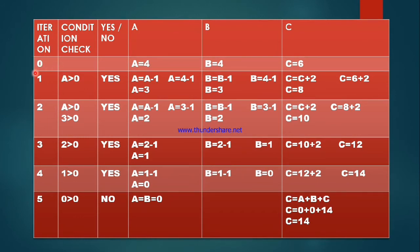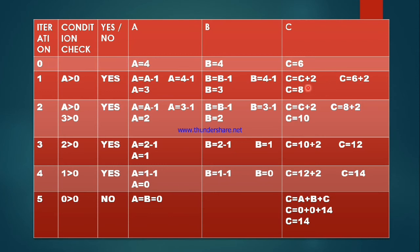This is iteration 0: a is equal to 4, b is equal to 4, c is equal to 6. In the first iteration, we check the condition a greater than 0 — condition is true. So we apply the formula: a becomes 3, b becomes 3, c becomes 8. Then we proceed to the next iteration.